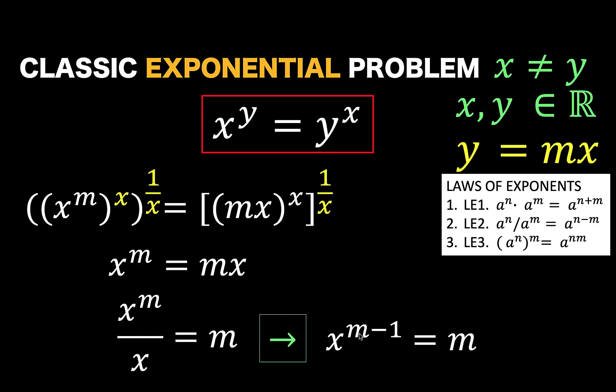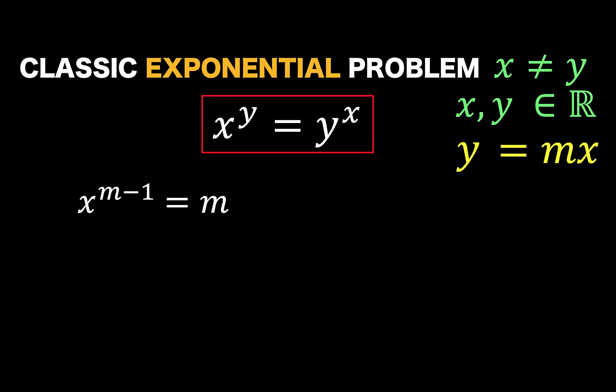x raised to m minus the exponent of 1 here, that is equal to the right side, m. We can continue simplifying this to isolate the variable x this way. Again, we can raise both sides of the equation to 1 over m minus 1, which is the reciprocal of the exponent m minus 1.